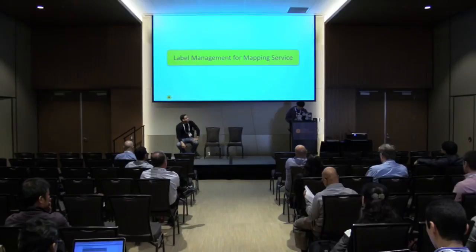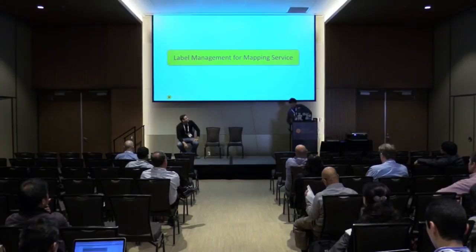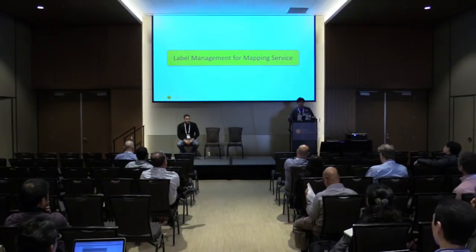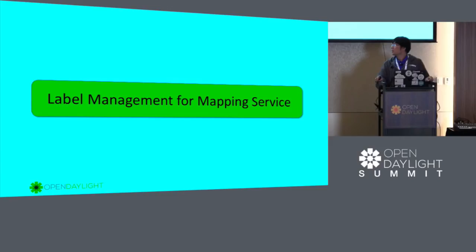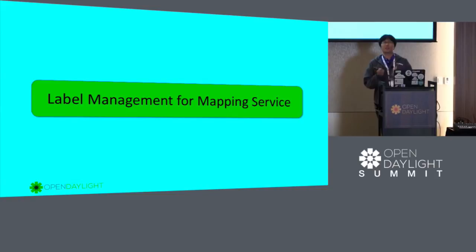I'm John from the HP Labs. I'm talking about the label management for the mapping service in the ODL NIC. As researchers, we've successfully integrated our previous work called PGA to the ODL NIC. At the last ODL Summit, we introduced our PGA from our latest research, and now we have PGA available in the ODL NIC. Today we are talking about our research work for the next release of ODL NIC. One of the limitations in the current ODL NIC is the mapping service - how to manage this mapping service automatically, and how to manage endpoints and key/value pairs in this mapping service.